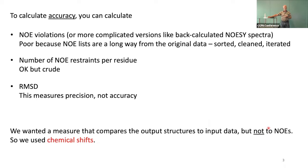What we wanted was a method that compared the output data — the structure — to the input data — your NMR data — as far as we could get. We didn't want to compare it to actual spectra because that's quite messy and difficult. So what we did is use chemical shifts. Basically, what ANSWER does is compare the input chemical shifts, your assignments, to the output structures, and uses that to tell if the structure is good or not.